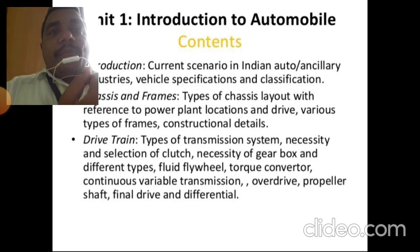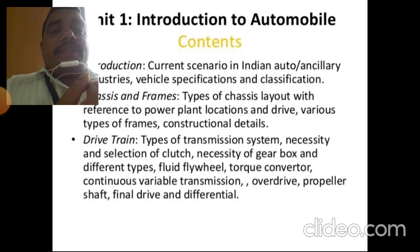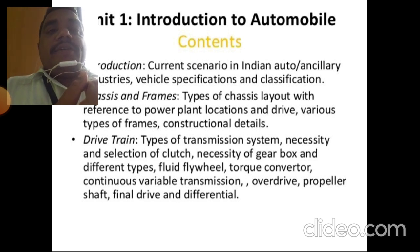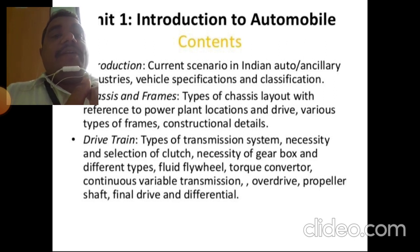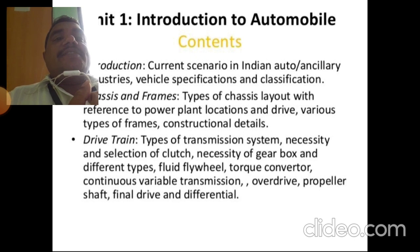The second subtopic in the first unit is the drive chain. Under this, we studied types of transmission systems, necessity and selection of clutch, necessity of gearbox and different types of gearboxes, fluid flywheel, torque converter, CVT (Continuous Variable Transmission), overdrive, propeller shaft, final drive, and differential. These are the contents of the first unit: Introduction to Automobiles.